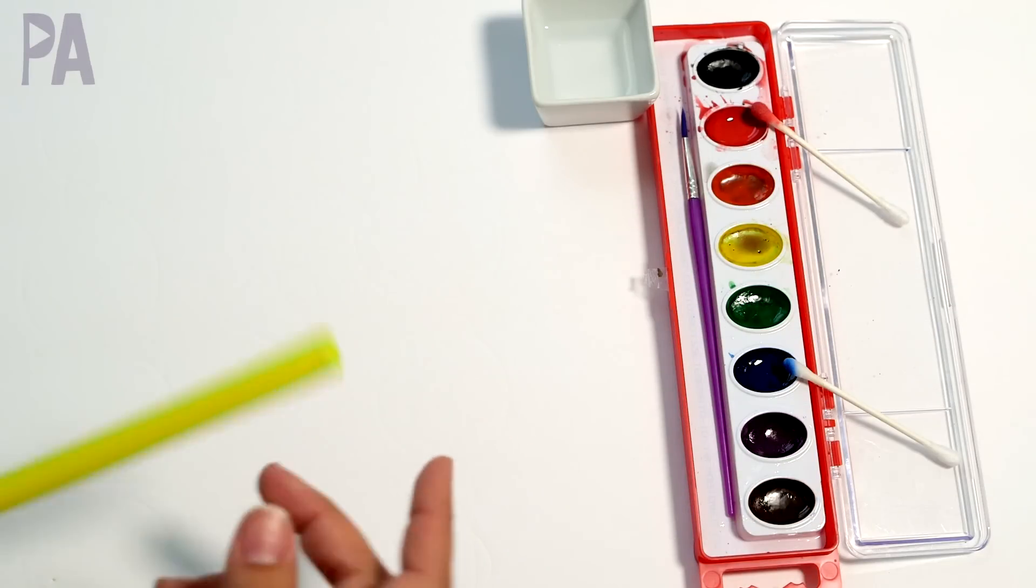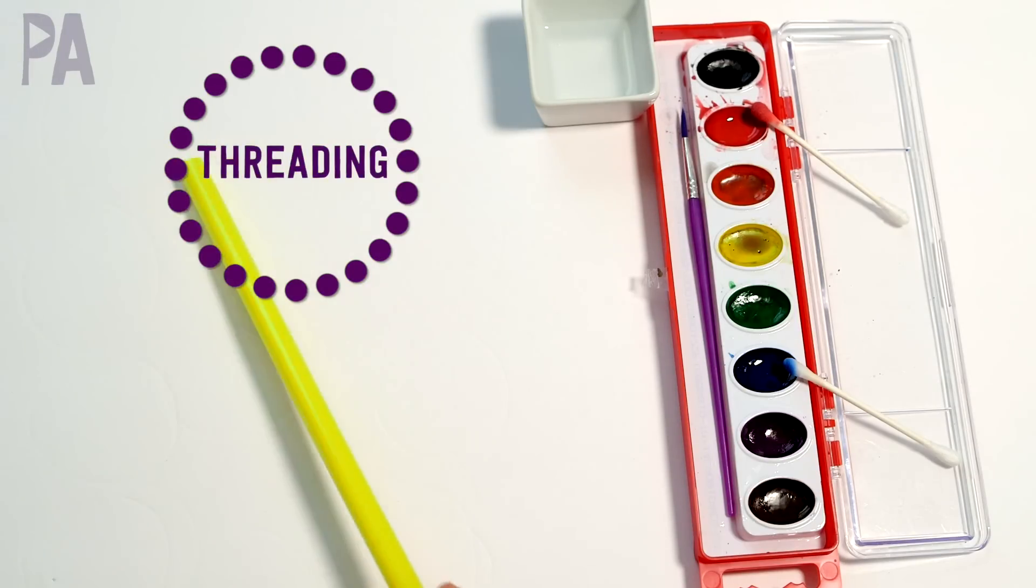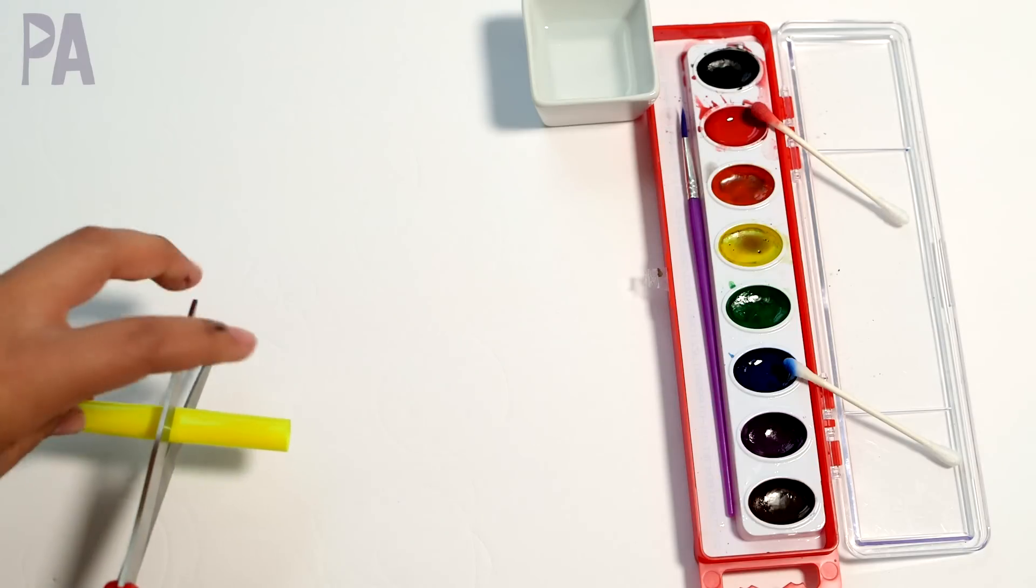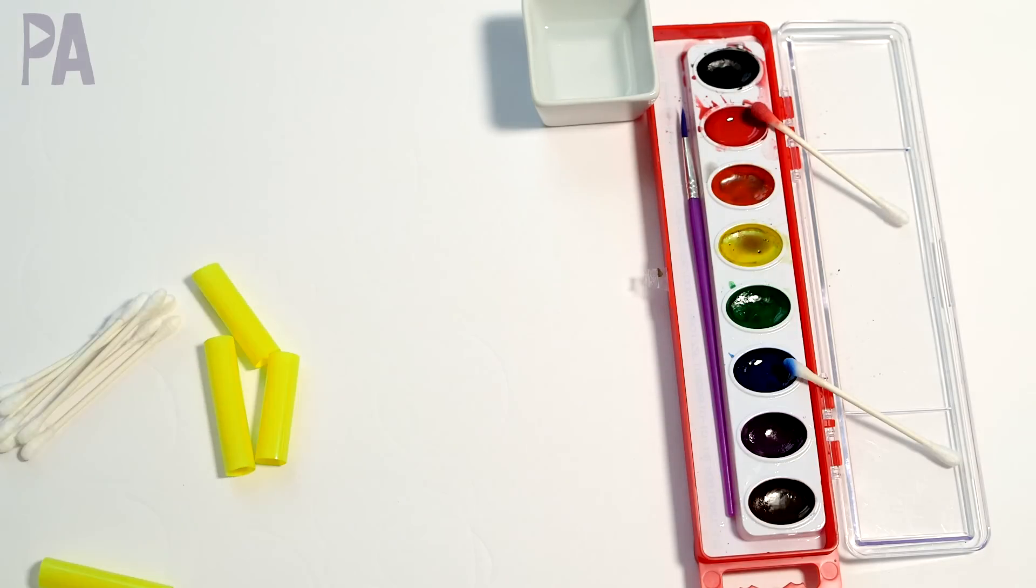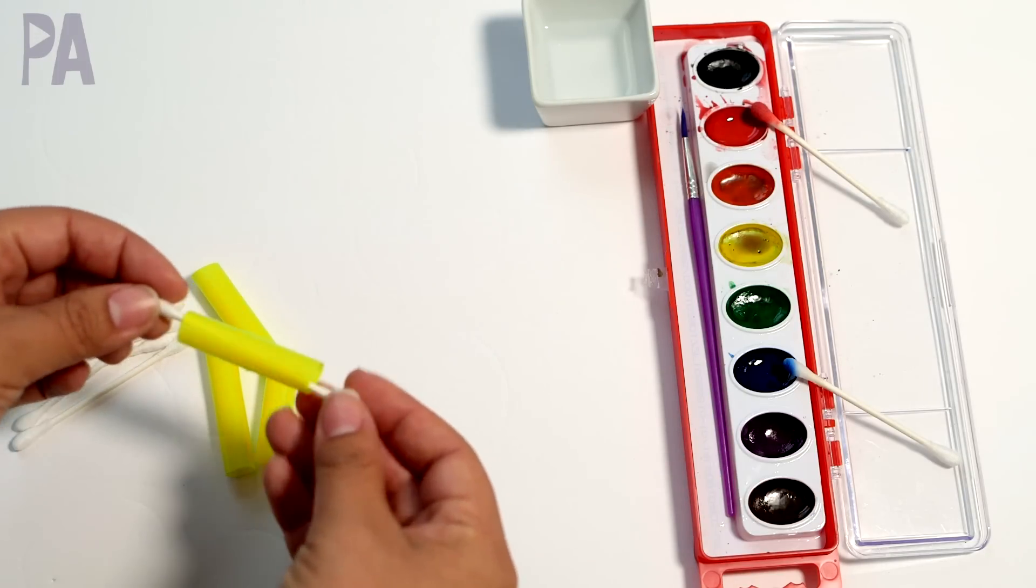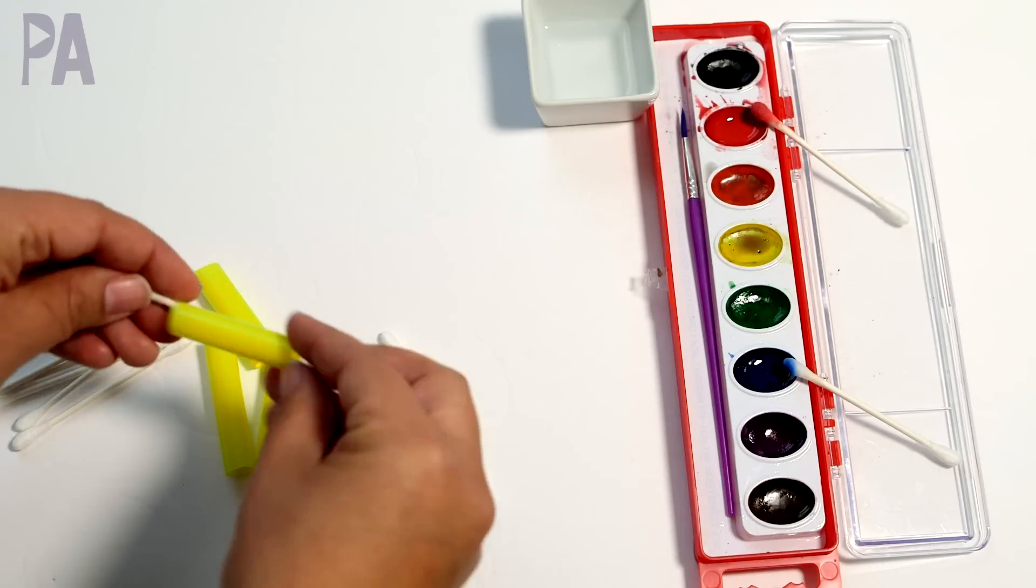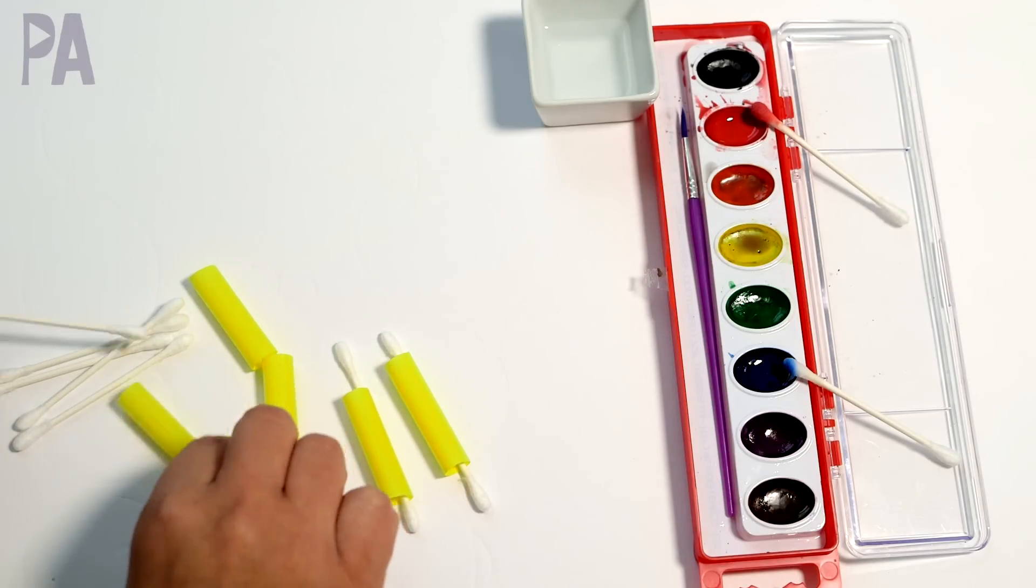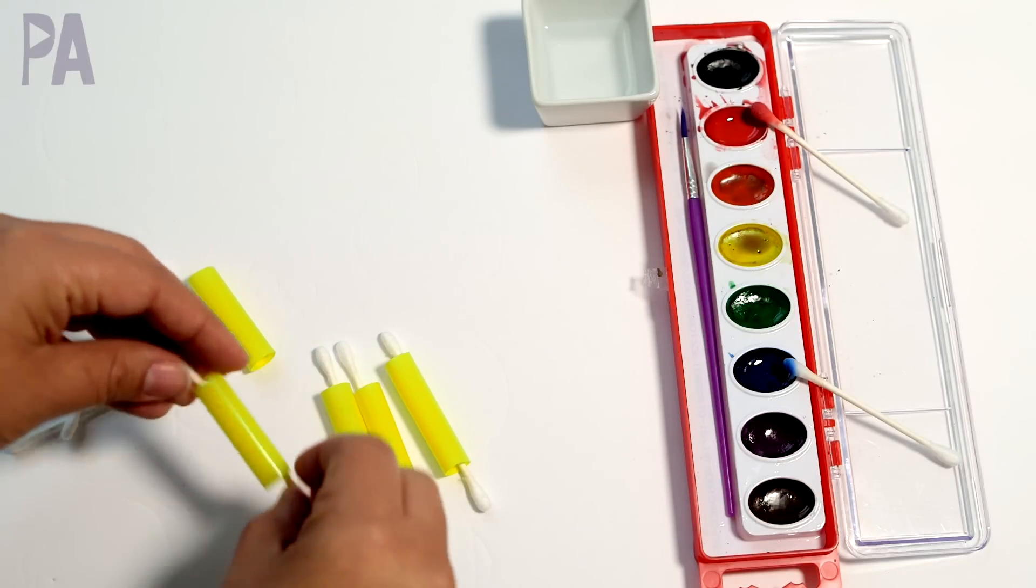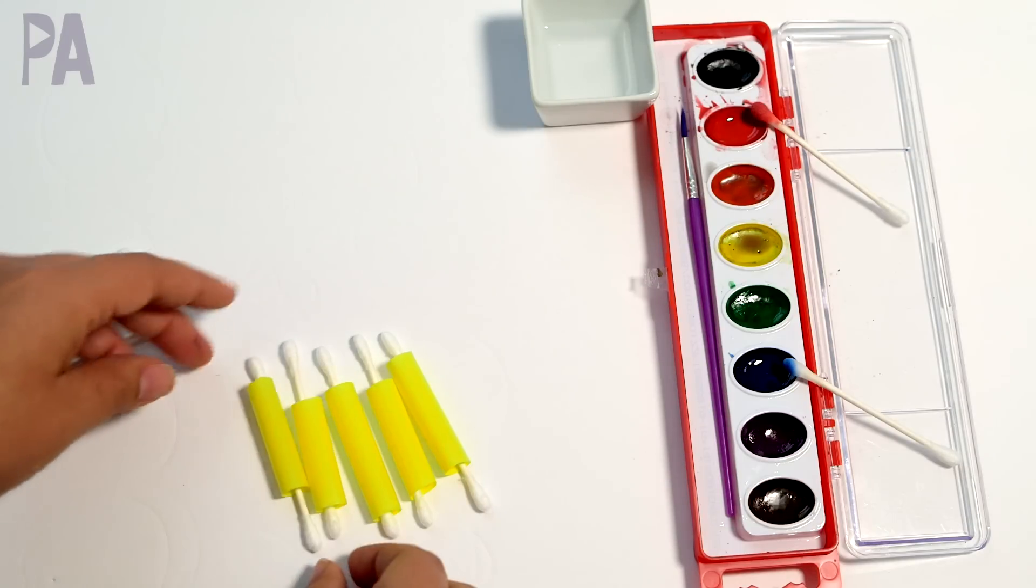This next one, you don't even need the paint at all, but if you have a straw, I have the large milkshake ones here, you can also use regular size straws. Cut them up into maybe about an inch long pieces, definitely smaller than the q-tip itself, and then this is a threading exercise. So you take the q-tip and your child will thread the q-tip inside. Now with the bigger milkshake straws, it's going to be a little bit easier because the opening's wider, so if you use the smaller straws, it'll be a little bit more difficult, but this is excellent fine motor practice. You can get different colored straws if you wish, and just thread them all in there. It might even be a fun activity to do before you start using the q-tips for painting.